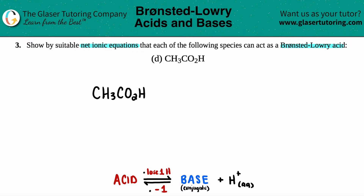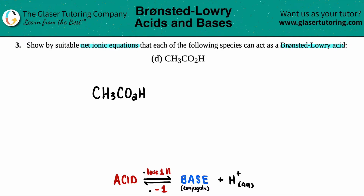What acids do is that they break off one of their hydrogens — they always lose one hydrogen. Now in this case, it's a little bit tricky because you have three hydrogens here and one hydrogen on the end. The reasoning is that the hydrogen linked to the more electronegative element is the one that breaks off. These hydrogens are located next to carbon, and this hydrogen is located next to one of the oxygens.